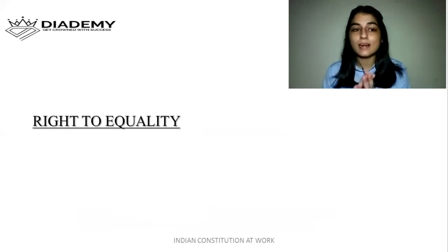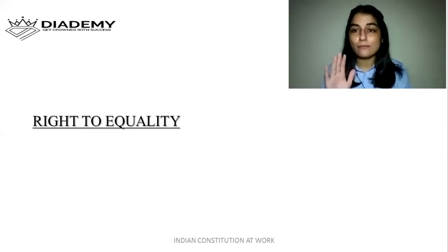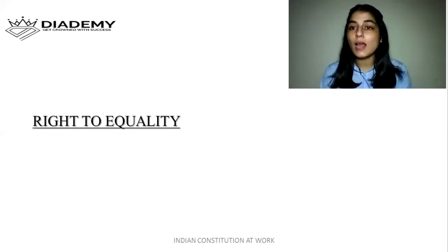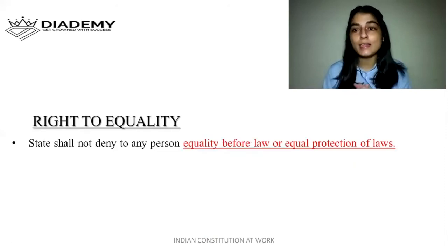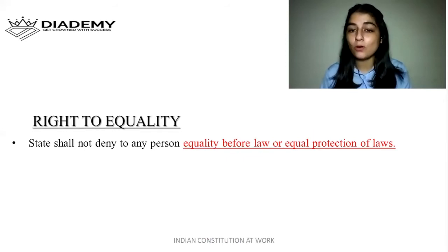The first right is the right to equality. Under this right, there are Articles 14, 15, 16, 17, and 18 — five articles in total. Article 14 states that the state shall not deny to any person equality before law or equal protection of laws.